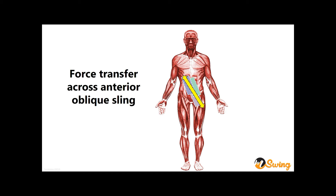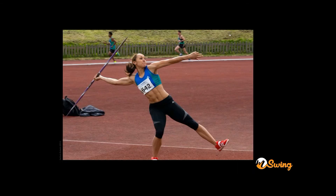You'll see this beautifully when someone's performing a throw. If we look at the javelin thrower, it's not just an arm action — it's a whole body action. The javelin thrower strides out with that left leg, which puts the anterior oblique sling on stretch when the arm is taken back and the trunk is rotated away from that leg, meaning things are wound up.